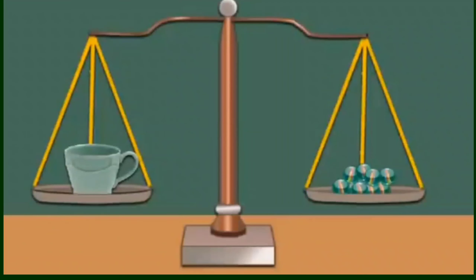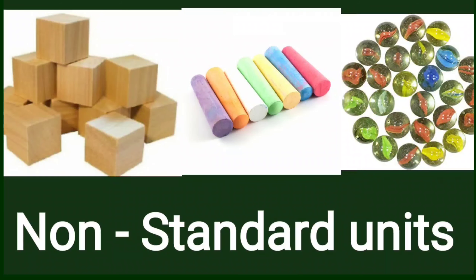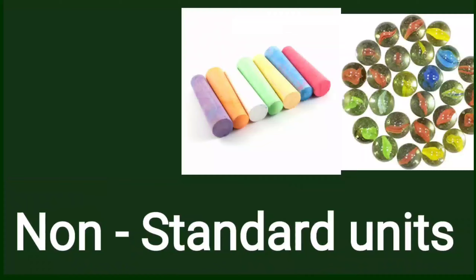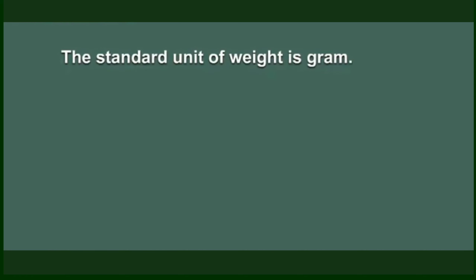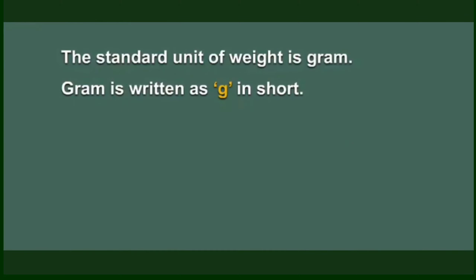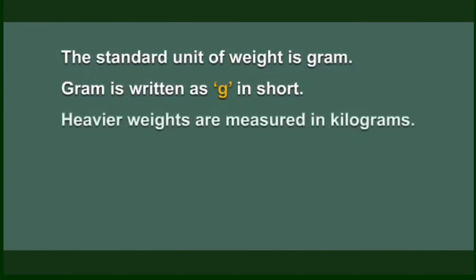Wooden blocks, marbles, apples — these are non-standard units of measuring weight. We also have standard units of measuring weight. The standard unit of weight is gram. Gram is written as g in short.